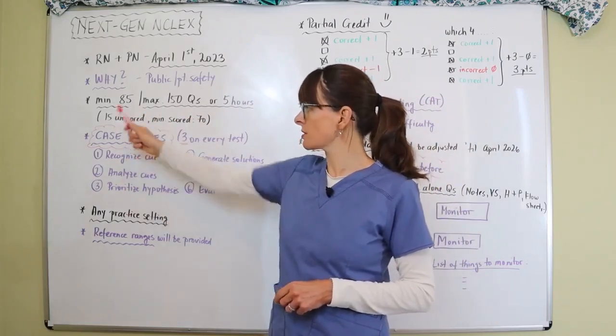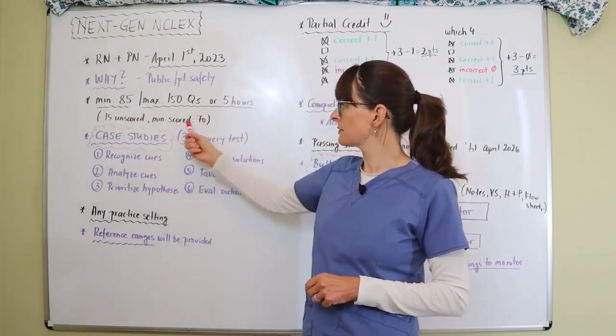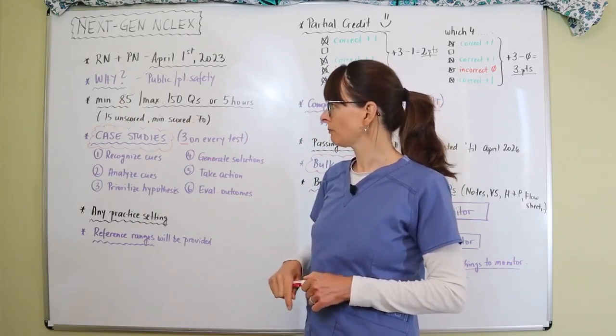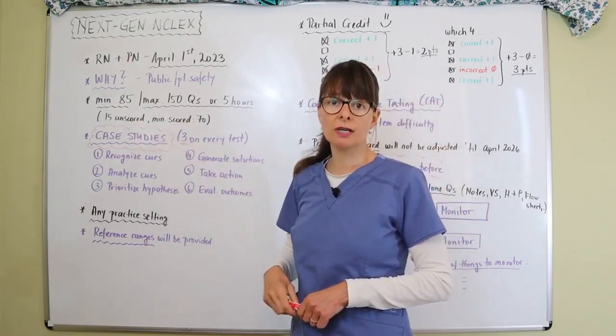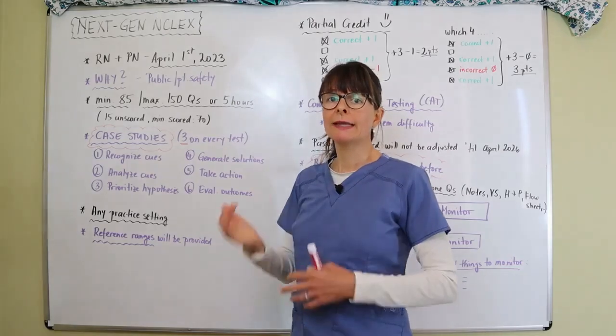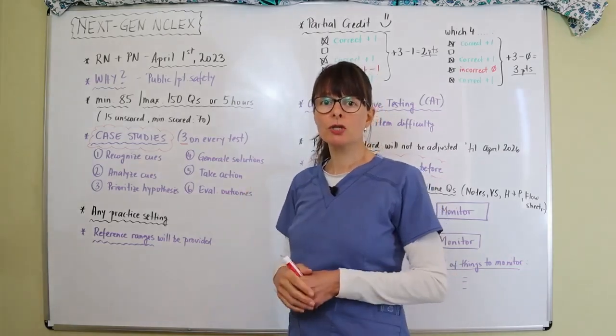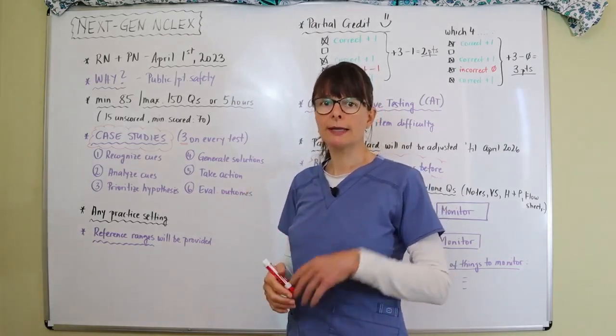Out of those 85 minimums, there are 15 questions that are unscored, which leaves the minimum scored to be 70, and you will not know which ones are the unscored questions.